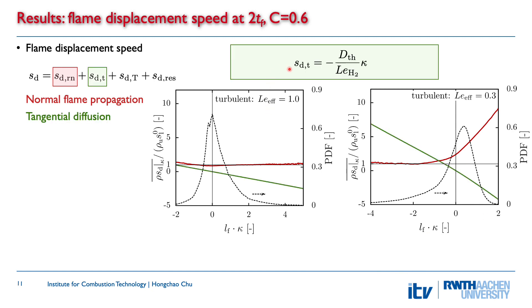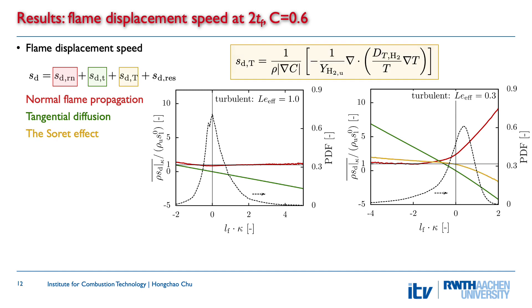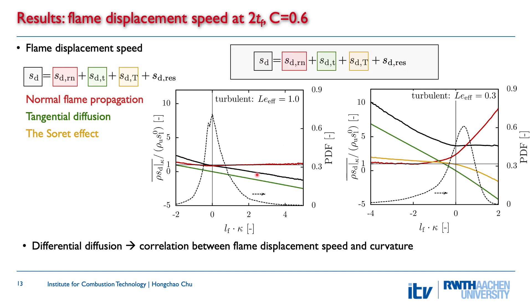The second effect is tangential diffusion, which correlates almost linearly negatively with curvature for both kernels. A third diffusion term is only considered in the simulation for the non-unity Lewis number kernel, and has a negative correlation with positive curvature. The total flame displacement speed for the unity Lewis number kernel shows a negative correlation with curvature due to tangential diffusion. For the non-unity kernel, the negative correlation is only seen for negative curvatures; the displacement speed becomes insensitive to positive curvatures because of the increase in normal propagation.